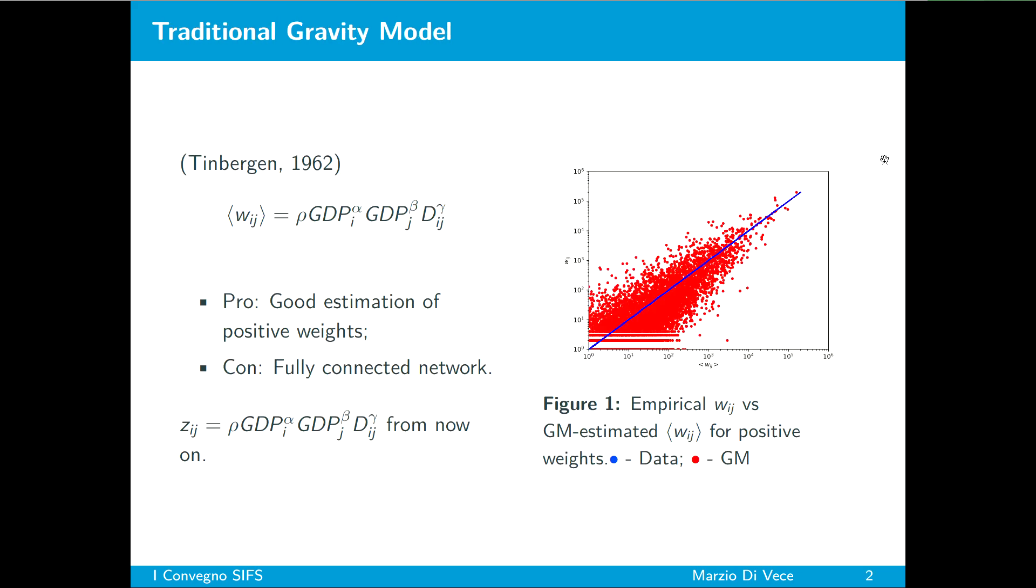We started by discussing the traditional gravity model where countries are seen as particles that exchange trade volumes as a gravity force, which will be dependent on the universal constant GDPs and inversely proportional to the distance. Here we use alpha, beta and gamma as parameters in order to estimate the impact of the covariates on the trade volumes. The pro of such model is that of estimating very well the positive weights, but it estimates also a fully connected network, which is in contrast to our scope.